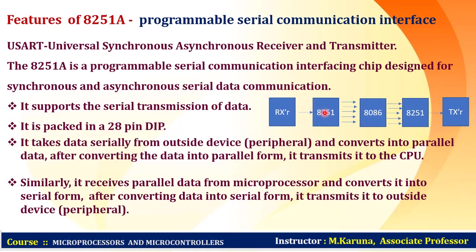In the receiver section, 8251 collects data from the outside world serially and converts it into parallel form with the help of a serial-to-parallel shift register, because 8286 is a parallel data transfer device. So 8251 is a serial data transfer device — data must be converted from serial to parallel on input, and from parallel to serial when transmitting.